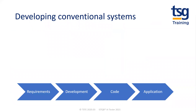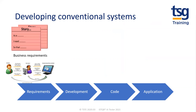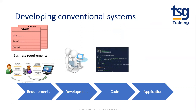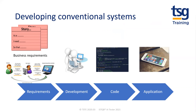Starting with developing conventional systems: you begin with some form of requirements — user stories, functional spec, technical spec — agreed with the customer. The software developer then designs and implements the solution in code, which is then tested, and this code is deployed to the target system. With conventional systems, it's relatively easy to understand how the system transforms inputs into outputs.